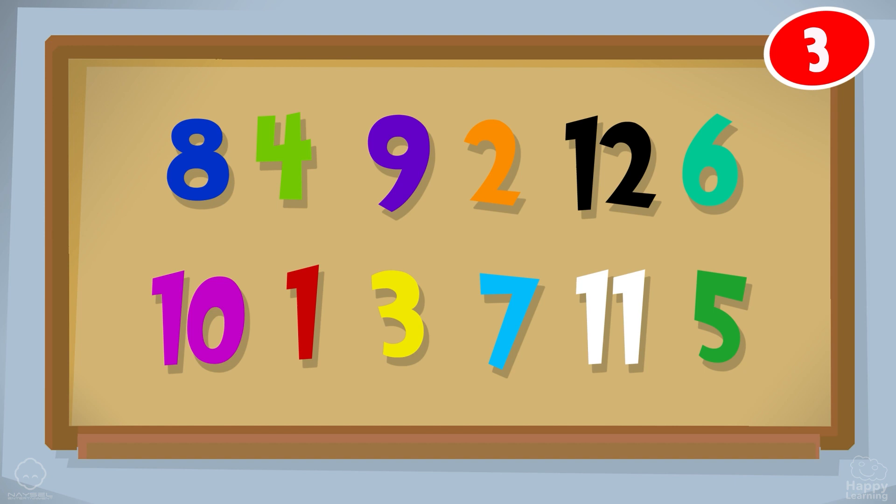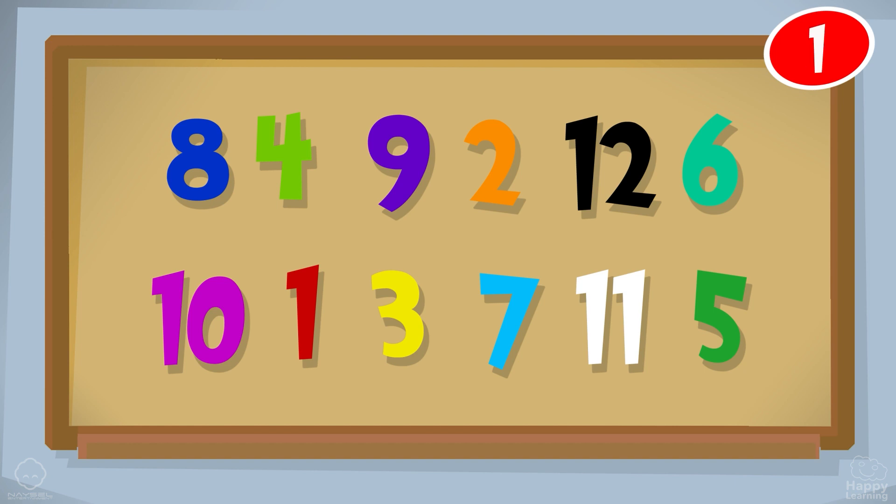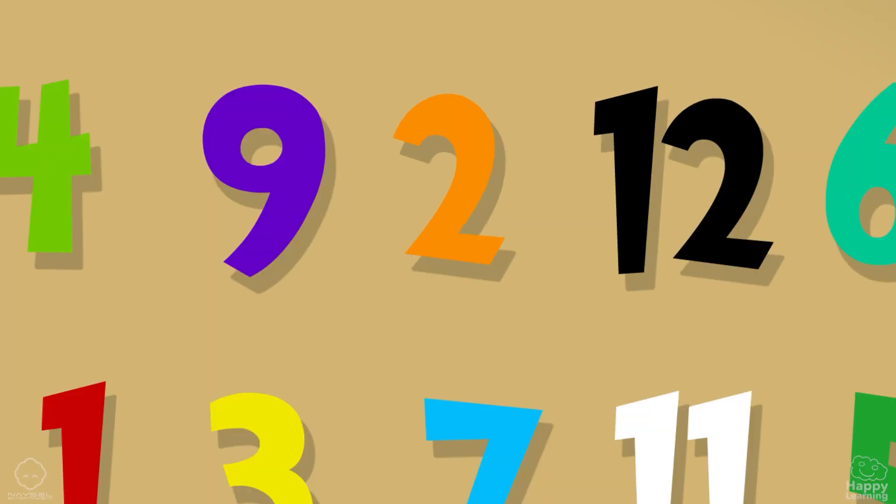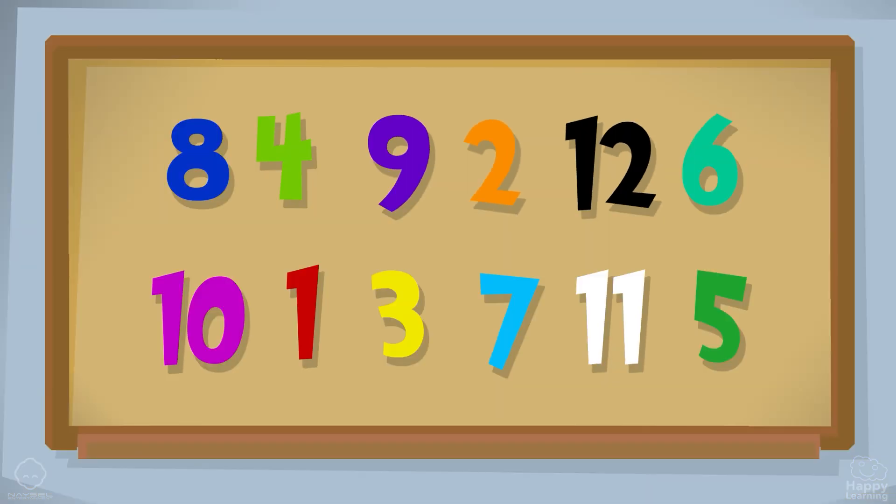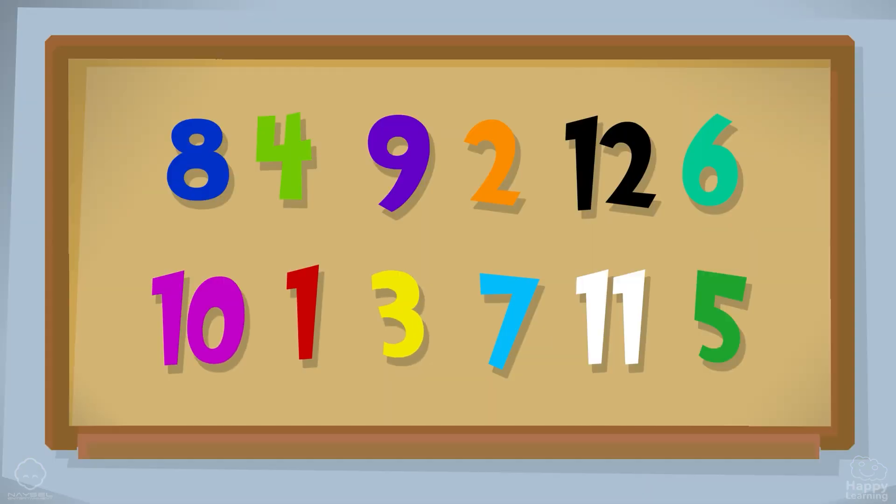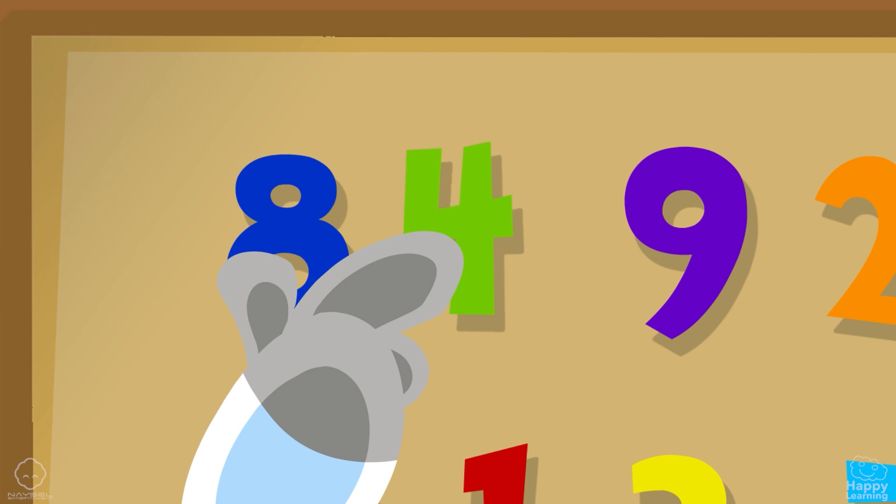Okay, Botti. Where's number 1? Well done. Where is the number 2? Good. Where is the number 3? Great. Where is the number 4? Amazing.